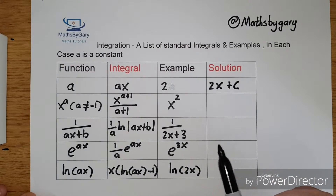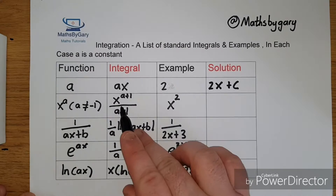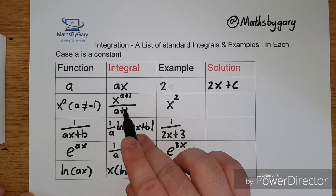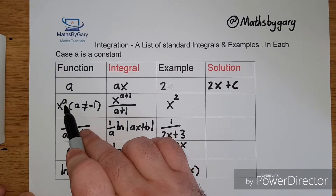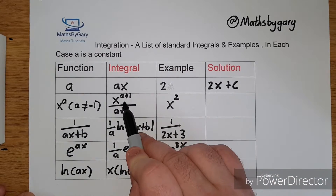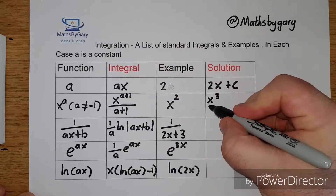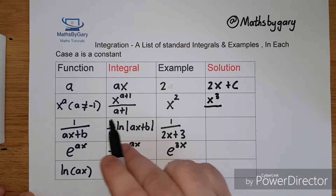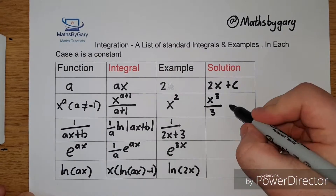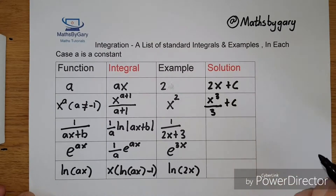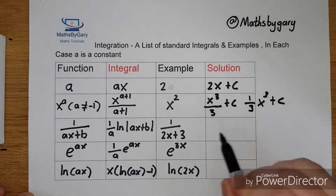Moving on to the next example: x to the a, where a does not equal minus 1, becomes x^(a+1) over (a+1). So x squared, where a is 2, gives x^(2+1) over (2+1), which is x cubed over 3. So x squared becomes x cubed over 3 plus c, or equivalently one third x cubed plus c. Both are correct.